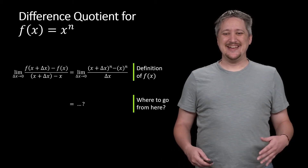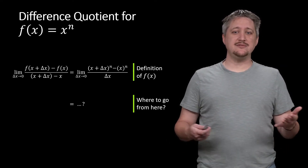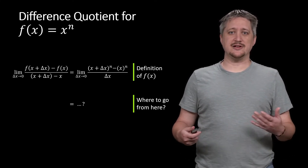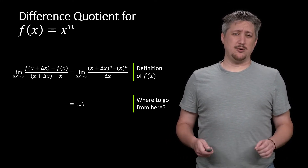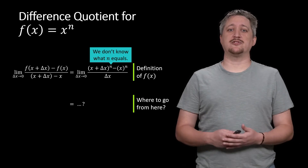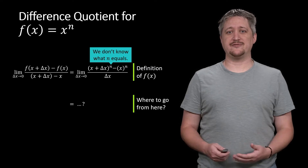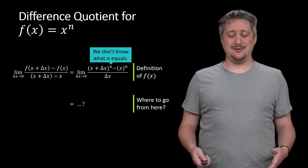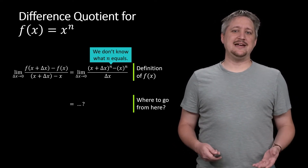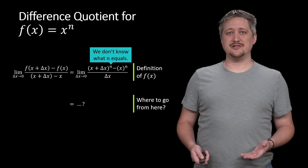If I knew what n was — say n were two — I would just square it, multiply it all out, collect like terms, and simplify. But the whole point is that we don't know what n is; we want a general form that works for any x to the n. So assuming n is two only solves this for that one case, which is not really what we're after.